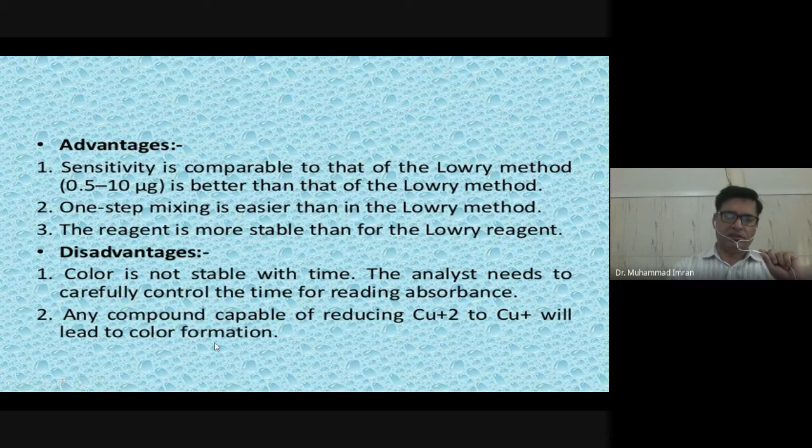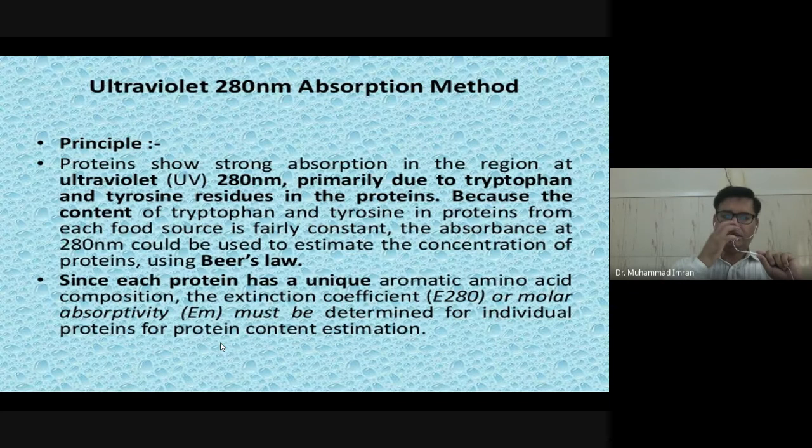For the BCA procedure, mix the protein solution with BCA reagent containing BCA sodium salt, sodium carbonate, sodium bicarbonate, and copper sulfate at around pH 11.25. Incubate for 30 minutes at 60 degrees centigrade, then analyze at 562 nm against the standard concentration. Advantages: more sensitive than Lowry, detects down to 5 to 10 micrograms, and one-step mixing is easier than the Lowry method. Disadvantage: color is not stable with time; analyst needs to carefully control the time for the reading. Any compound capable of reducing copper will lead to color formation, which is a main disadvantage.